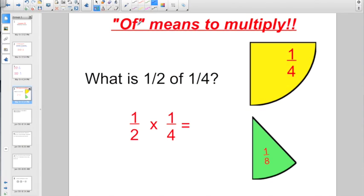The word of means to multiply. So if we had a problem like this, what is 1 half of 1 fourth? Of means to multiply. So you would go 1 half times 1 fourth. And so numerator times numerator. 1 times 1. That's 1. Denominator times denominator. 2 times 4. That's 8.